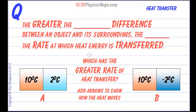Heat will flow between one object and another if the two objects are at different temperatures, and temperature is just a measure of how much thermal energy each object contains.